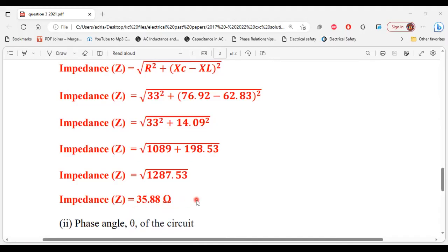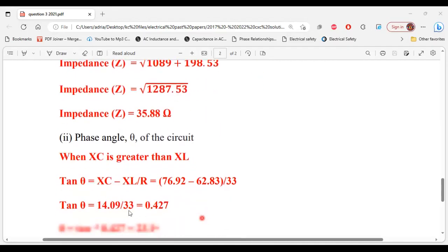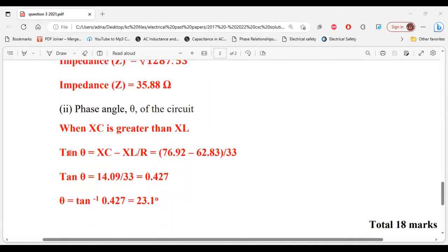All right, so that's it for part one of D. So let's move on to part two now. It says to calculate the phase angle of the circuit. All right, so when XC is greater than XL, tan θ is equal to (XC - XL) divided by R.